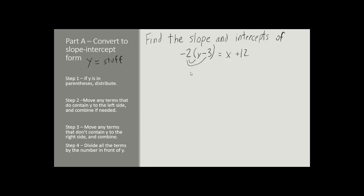So negative 2 times y gives us negative 2y, and the negative 2 times negative 3 gives us positive 6. Once again, make sure you remember your signs. It's very easy to make a mistake here. The right side does not change. It is still x plus 12.